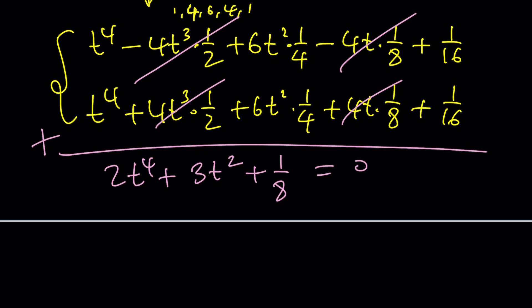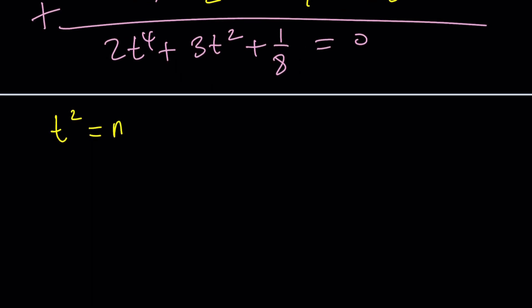Well, this equation is quartic, but it's a bi-quadratic. So we can easily make a substitution, set t squared equal to m, something that we didn't use, right?